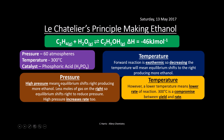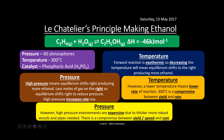For pressure: high pressure shifts equilibrium right because there are fewer gas moles on the right, producing more ethanol. Increased pressure also increases rate through more successful collisions. However, high-pressure equipment is expensive — thicker, more robust vessels and pipes. The compromise is 60 atmospheres, balancing yield, speed, and cost.